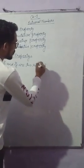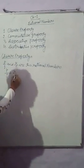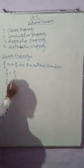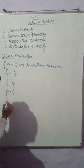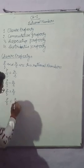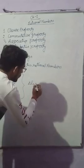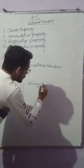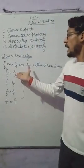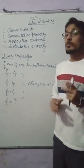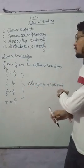If p upon q and r upon s are two rational numbers, then p upon q plus r upon s, p upon q minus r upon s, p upon q multiplied by r upon s, and p upon q divided by r upon s will always be a rational number.